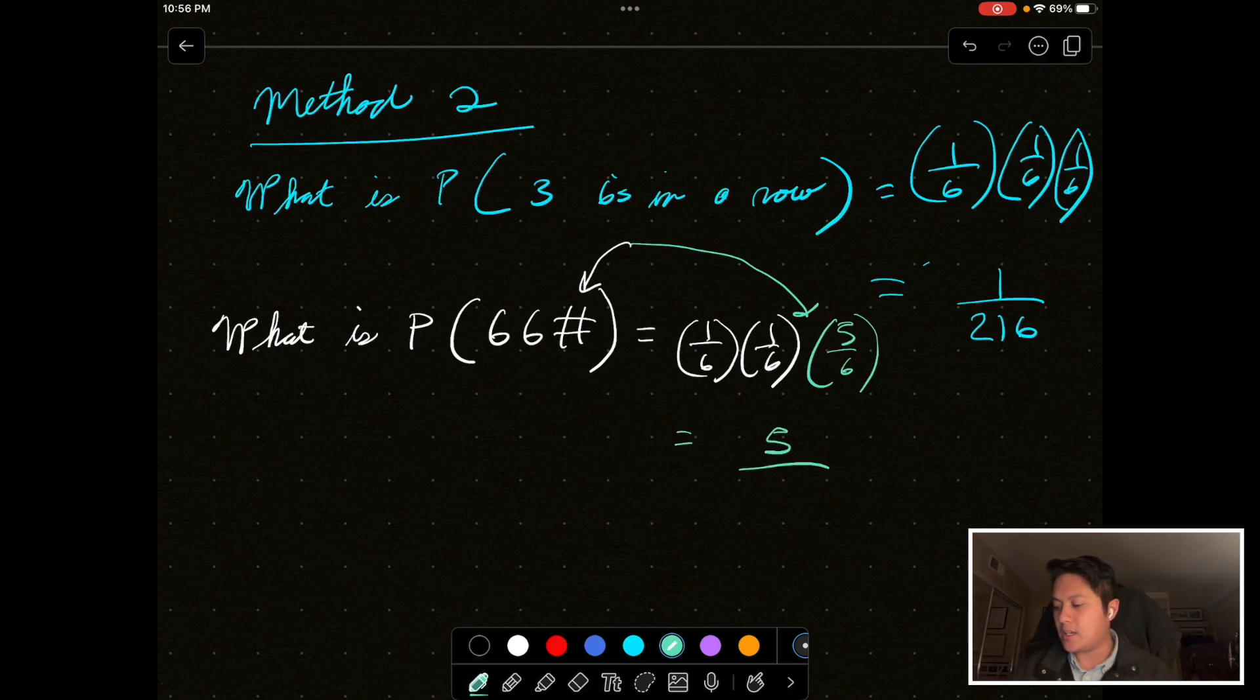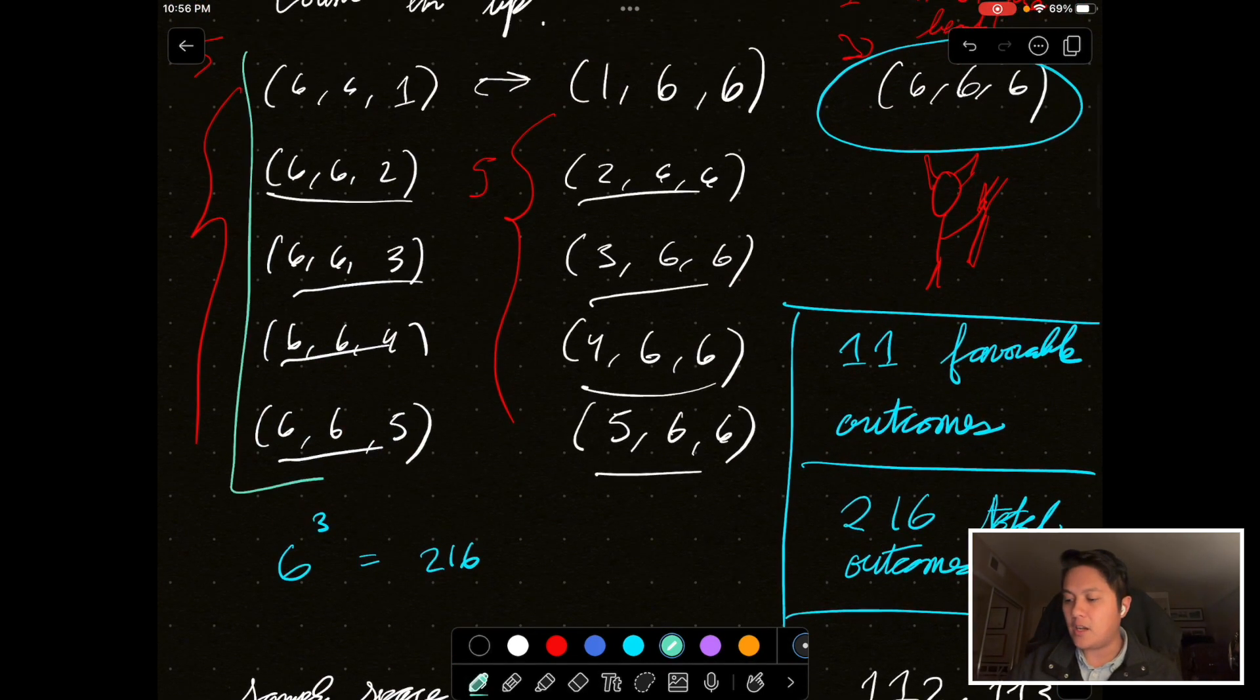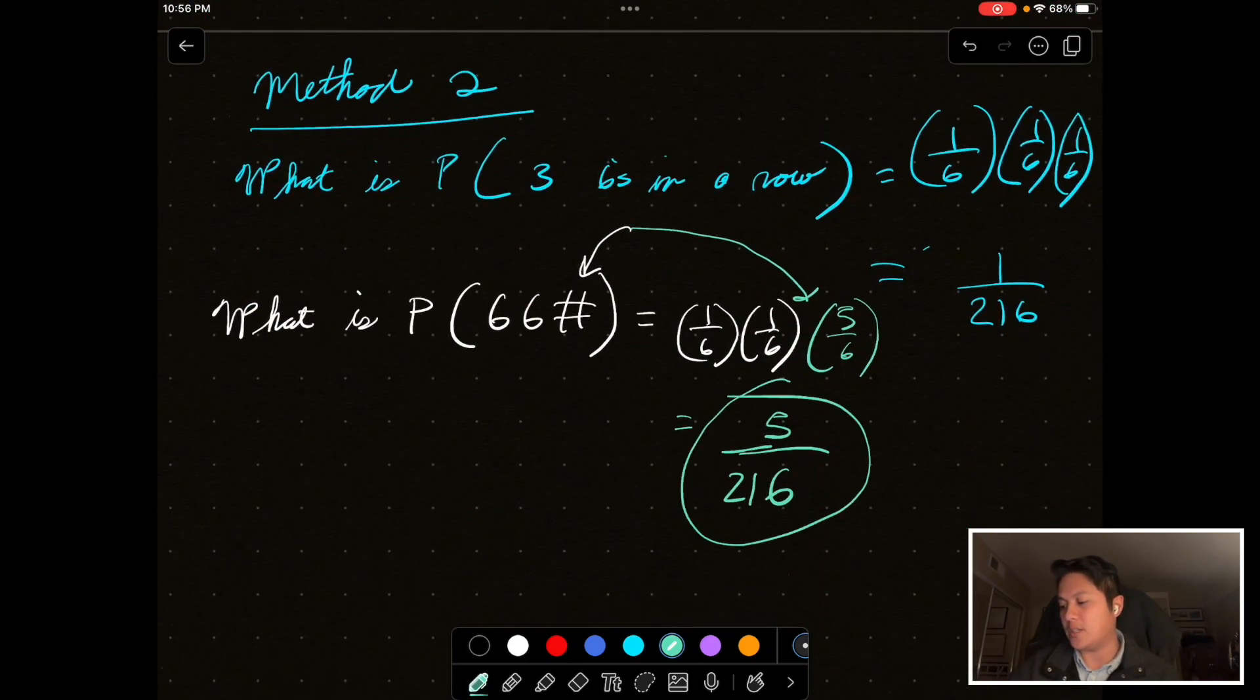And so, this is five over 216, which, again, represents this column right here, because I just wrote out explicitly all the cases where you can roll six on the first two rolls, and then get a number besides six. So, that are all the five possibilities right there, five over 216.